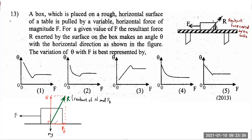You can either draw N and FF separately, or erase both and draw only R. This is the angle theta they're talking about. The resultant of N and FF is R. N is the upward force acting in the system, which must equal the downward force, so N is constant — a constant value equal to Mg.